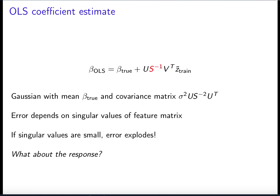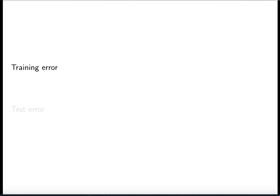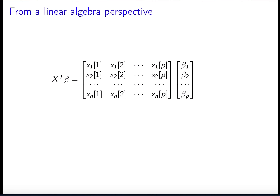Now we can ask: sure, the coefficients might explode because of this error, but what happens to the response? As we'll see, it's kind of tricky, because the response does not necessarily explode. We're going to focus first on the training error, then analyze the test error. In order to study the training error, we're going to look at ordinary least squares from a geometric or linear algebraic perspective. The linear model for an arbitrary beta — everything is centered so no constant terms — is what we're fitting by changing beta.